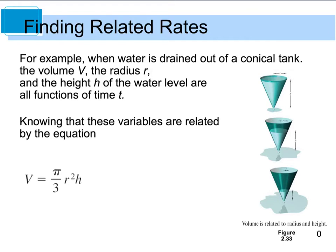Knowing that all of these variables are related, we're going to start out with a basic equation for the volume of that conical object, V equals pi over 3 times r squared h, and we're going to take the derivative of that.